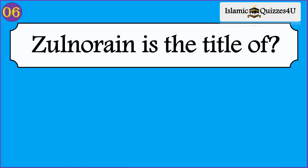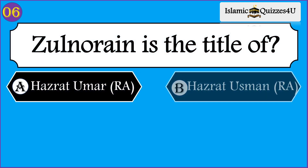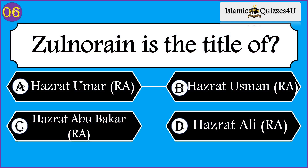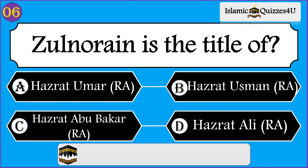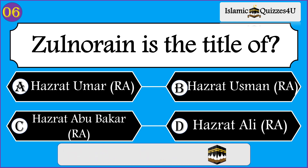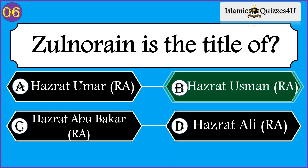Question number six: Zul Nourain is the title of — Option A: Hazrat Umar. Option B: Hazrat Uthman. Option C: Hazrat Abu Bakr. Option D: Hazrat Ali (Radi Allahu Anhu). Correct option is Hazrat Uthman (Radi Allahu Anhu).